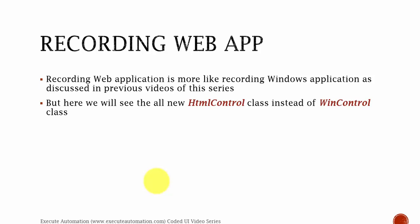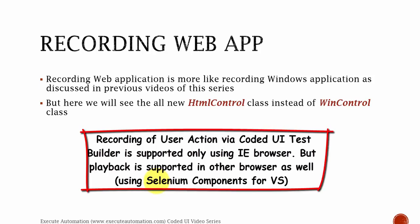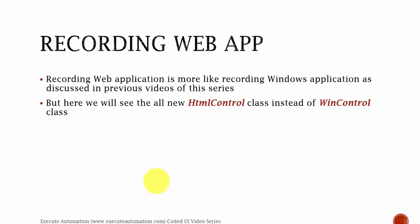Let me open Internet Explorer. Just one note before that: recording in Code.UI test builder is supported only in Internet Explorer, which means we can only record user actions using Internet Explorer and not with any other browser like Firefox, Chrome, Safari, or Opera. But you can still play back the recorded test in other browsers using a Selenium component for Visual Studio — we will discuss cross-browser testing in upcoming videos. For now, just keep in mind that to record using Visual Studio Code.UI test builder you need to use Internet Explorer.